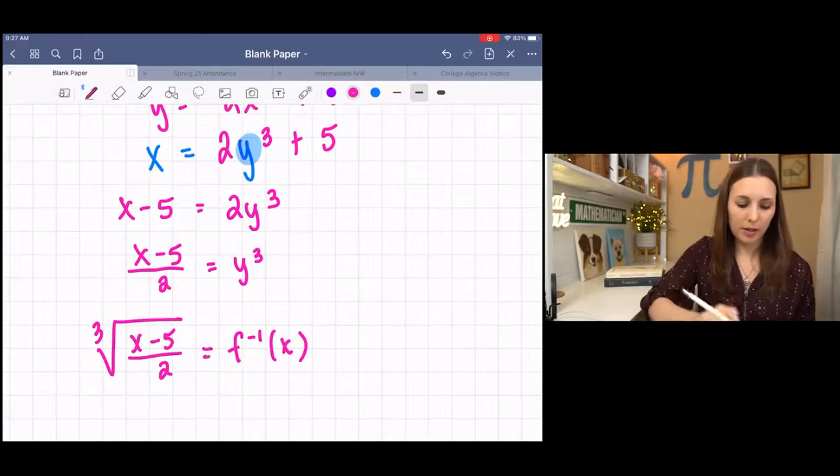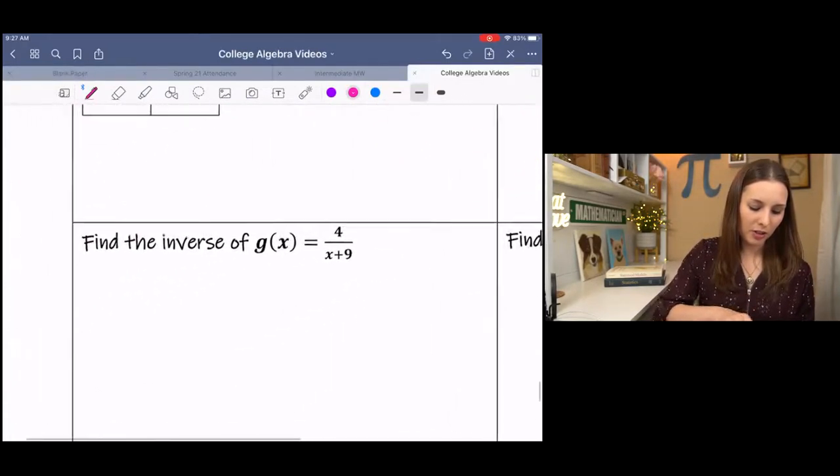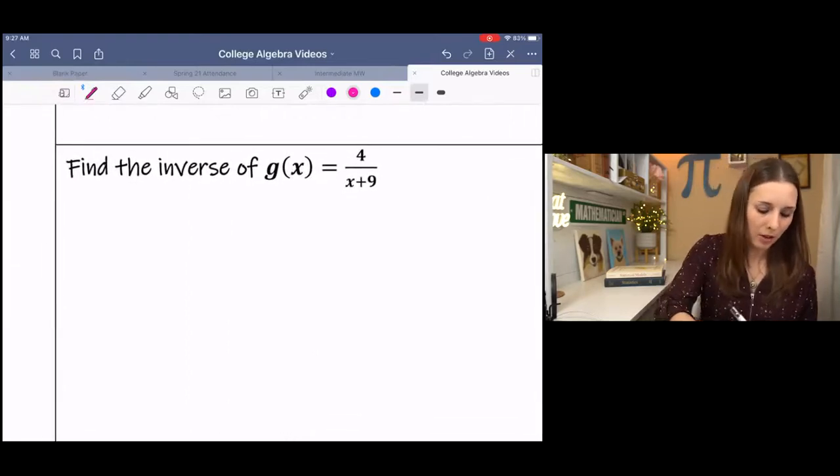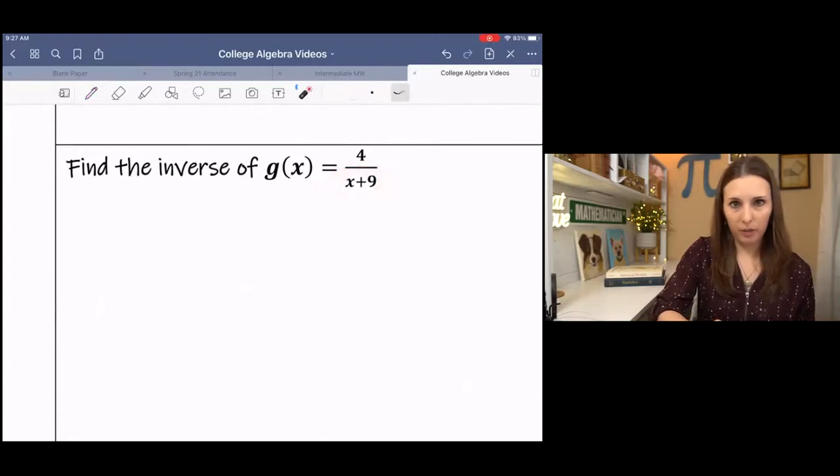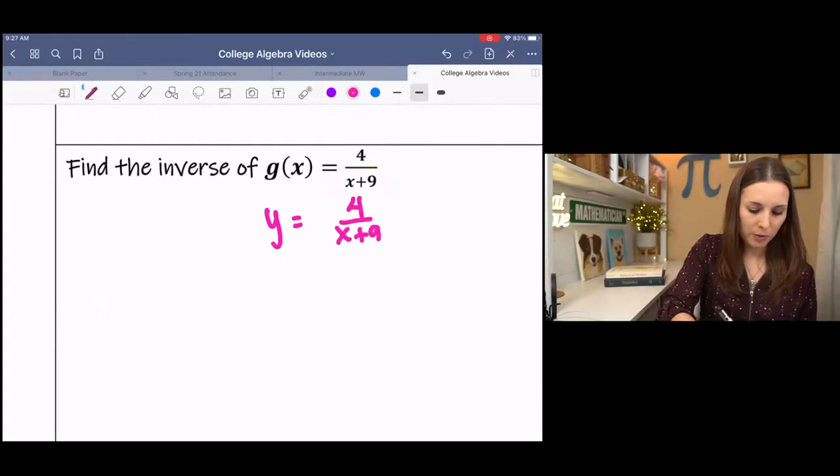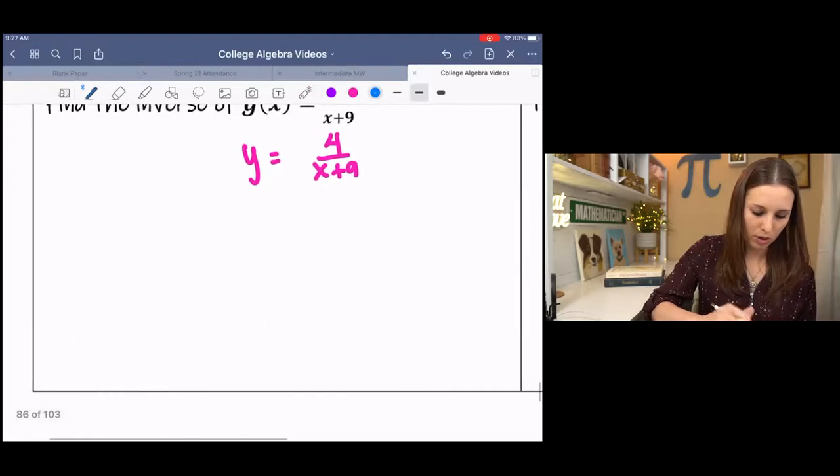And I show this because in the next example, it's going to be a little bit easier to do it with the second method, because our variable is in the denominator. So I'm going to change this to Y. Inverse means we're flipping X and Y.